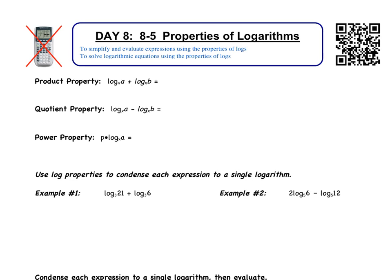Welcome to section 5. Today we'll be learning about properties of logarithms. We are going to be learning three basic properties: the product, quotient, and power properties. These are going to be used to simplify expressions — to take two logs and put them into one — and then they're also going to be used to solve logarithmic equations.